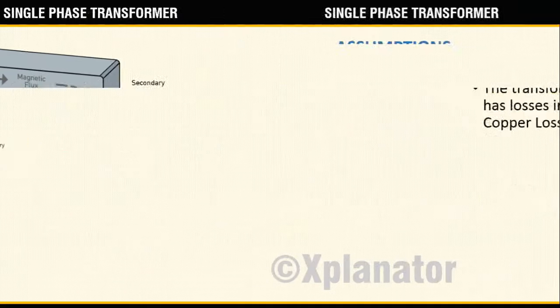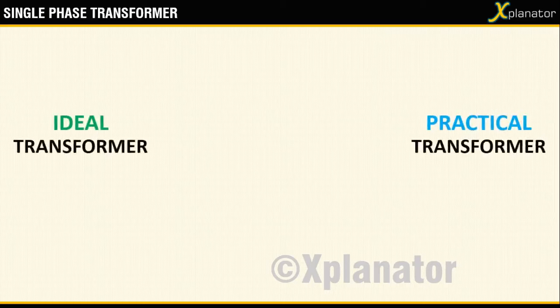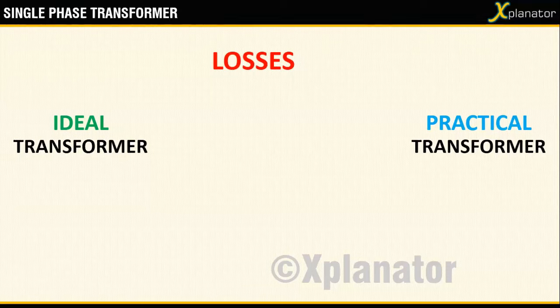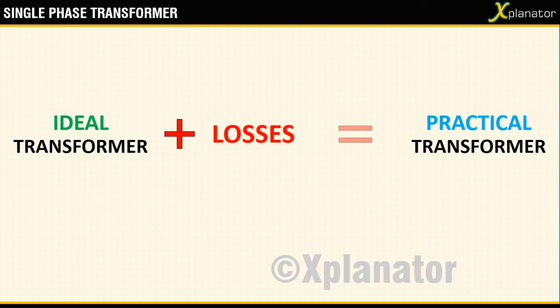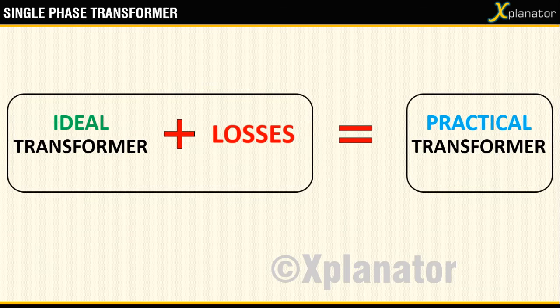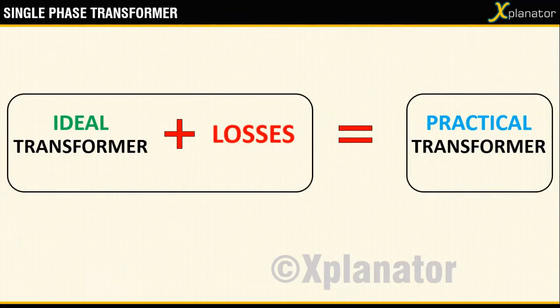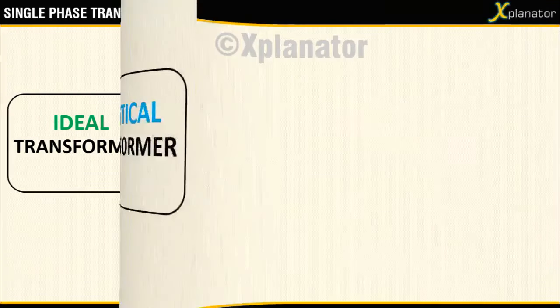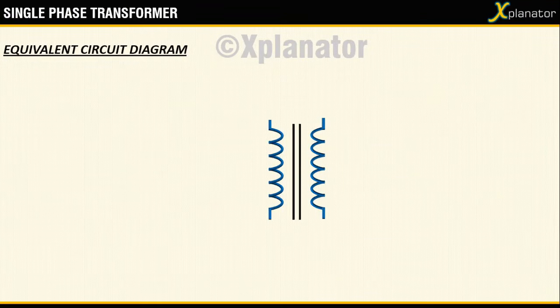The difference between an ideal and a practical transformer is that a practical transformer has losses while ideal does not. So if we draw an ideal transformer and add losses to it, it can be converted into a practical transformer. With this concept, draw an ideal transformer, which means two windings, primary and secondary.